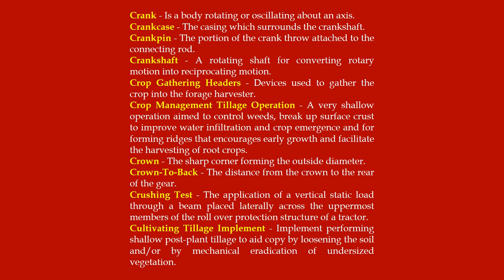Crank: a body rotating or oscillating about an axis. Crankcase: the casing which surrounds the crankshaft. Crankpin: the portion of the crank throw attached to the connecting rod. Crankshaft: a rotating shaft for converting rotary motion into reciprocating motion. Crop gathering headers: devices used to gather the crop into the forage harvester.